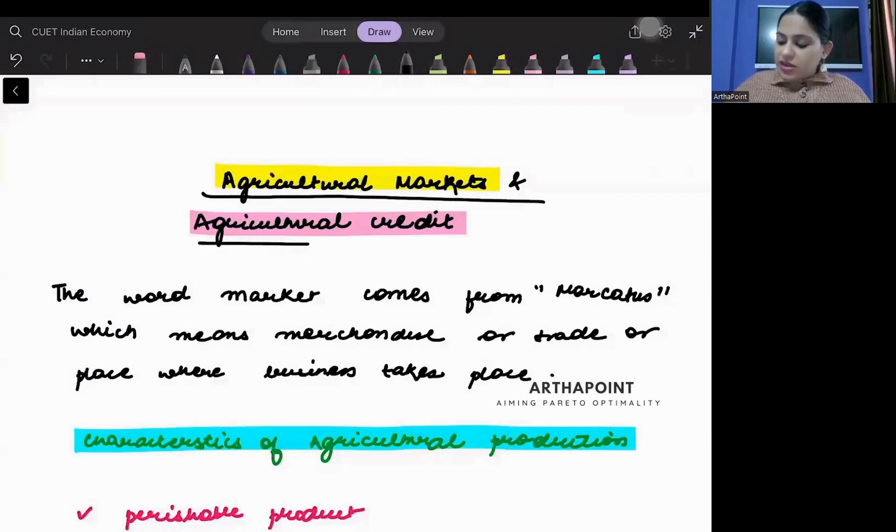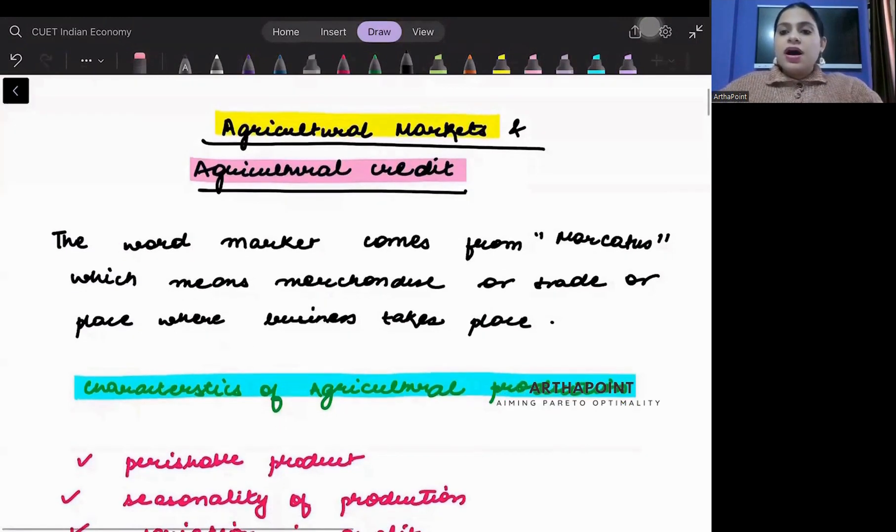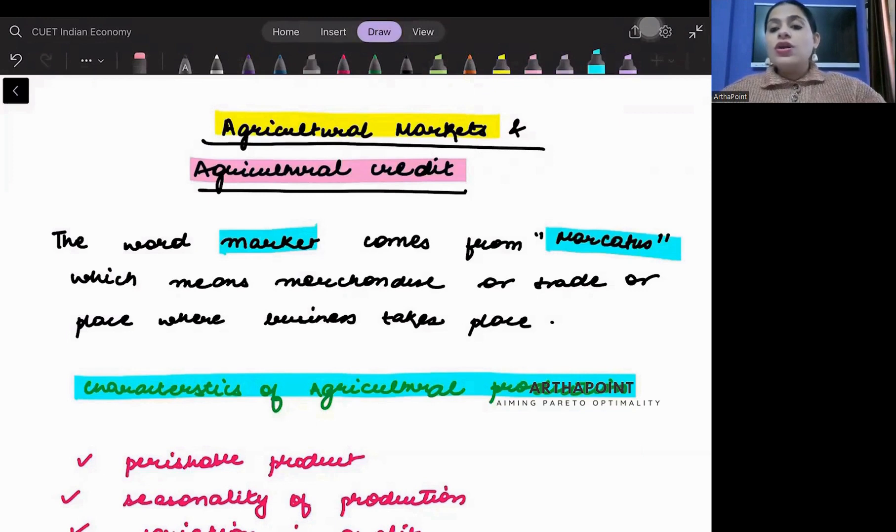Agricultural market and agricultural credit. The word market comes from market tax, which means merchandise, which means goods. Jahaan par bhi goods khareide ya bache jaate hain, wherever goods are traded, sold, or purchased, that is called market tax. Market tax is a word from which market is derived, which means merchandise or trade or wherever business takes place.